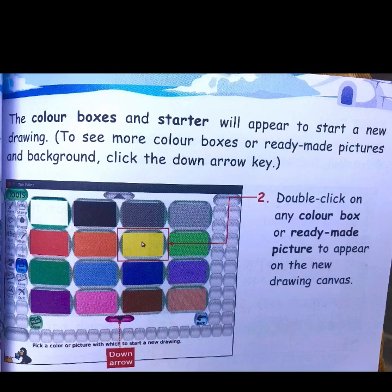To see more color boxes or ready-made pictures and backgrounds, click the down arrow key. The first step was to click on the New Tool from the toolbar. The second step is to double-click on any color box or ready-made picture to appear on the new drawing canvas.